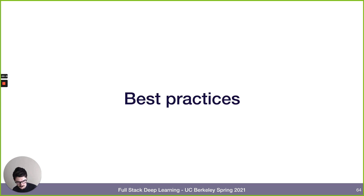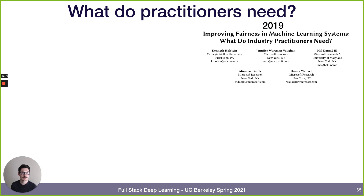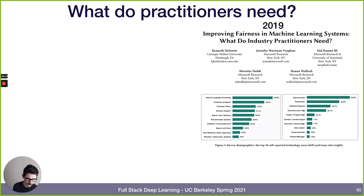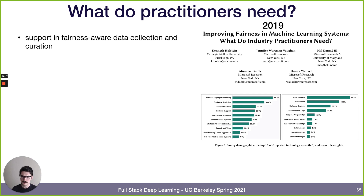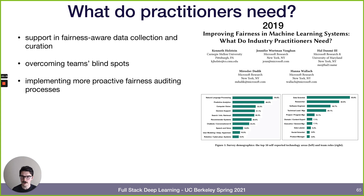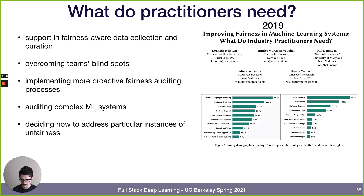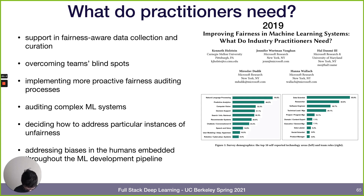What can we do about these problems? A 2019 paper, 'Improving Fairness in ML Systems: What Do Practitioners Need?' surveyed data scientists, researchers, and software engineers working in NLP, predictive analytics, computer vision, search, and recommender systems. Their needs: support in fairness-aware data collection and curation, overcoming blind spots, implementing proactive fairness auditing, deciding how to address instances of unfairness, and addressing biases in humans throughout the ML development pipeline — including developers and data annotators.